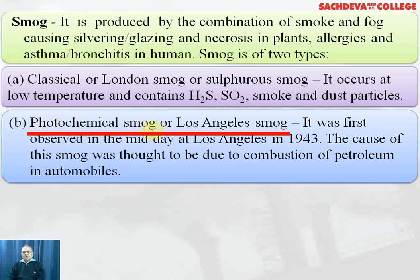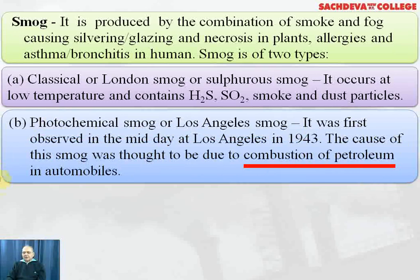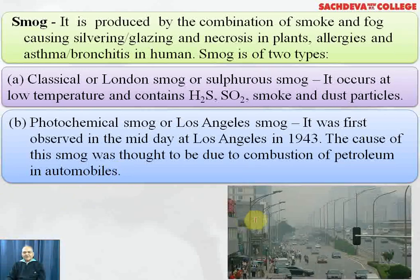The second type is photochemical smog or Los Angeles smog, first observed at midday in Los Angeles in 1943. Its cause was attributed to the combustion of petroleum in automobiles. Photochemical smog adversely affects not only human beings but also the primary productivity of plants.